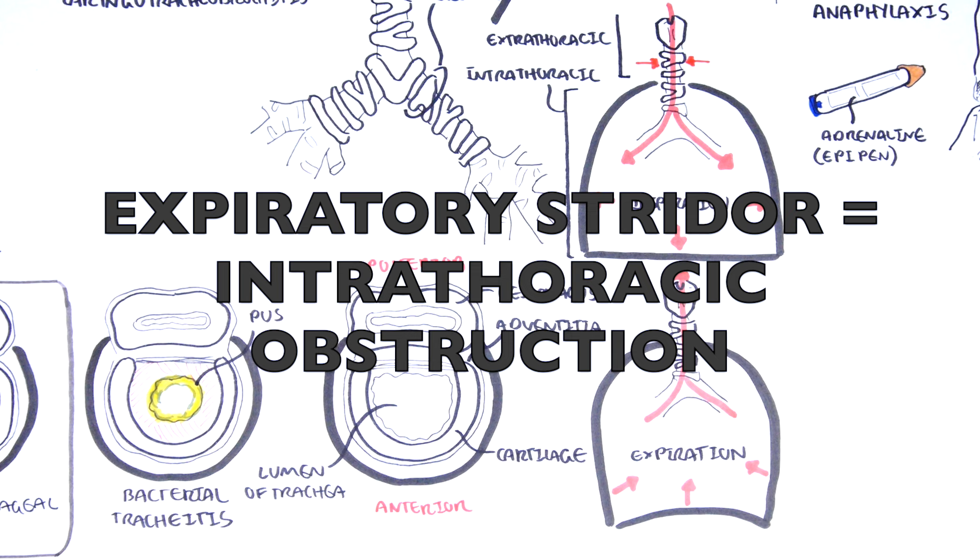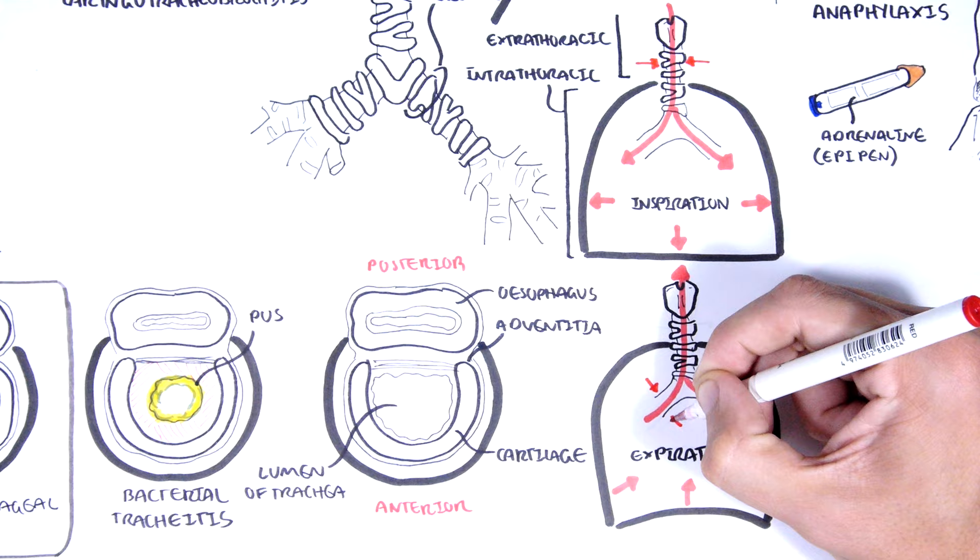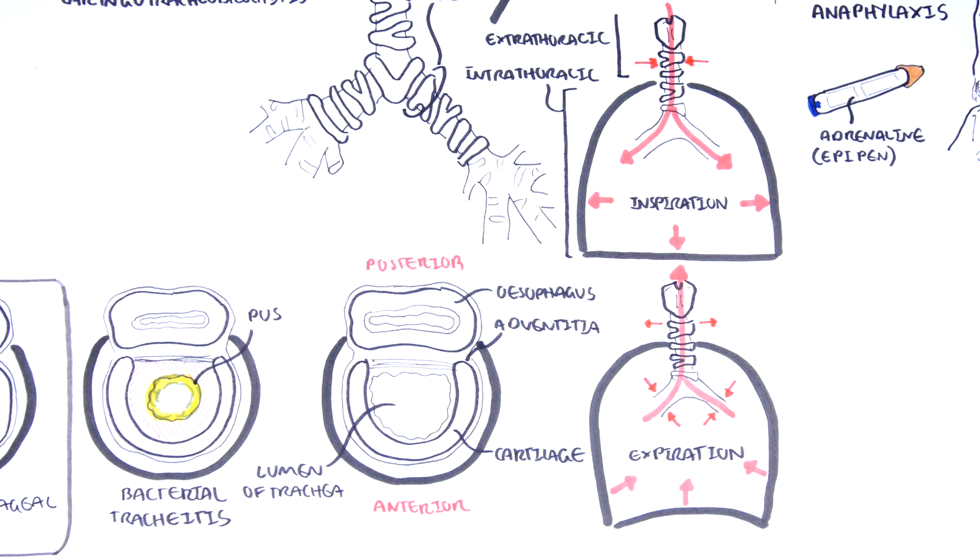Expiratory stridor is caused by intrathoracic obstruction. This is because pressure increases in the intrathoracic compartment, compressing the small airways, and so if you have obstruction here, it will amplify the sound so you get expiratory stridor.